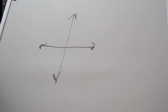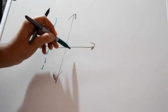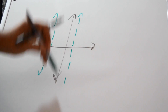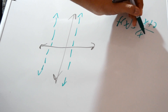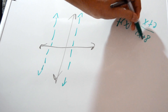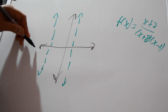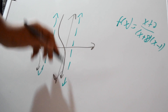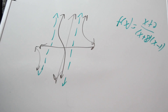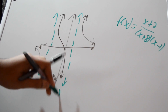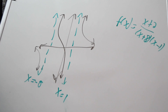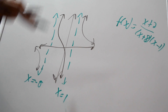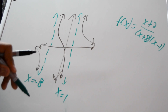An asymptote is a line where it doesn't meet the graph. We'll use the same graph from before. There's a line at x equals negative eight and x equals one. The function is f(x) = (x+2) / ((x-8)(x+8)(x-1)). The graph has asymptotes at x equals negative eight and x equals one.